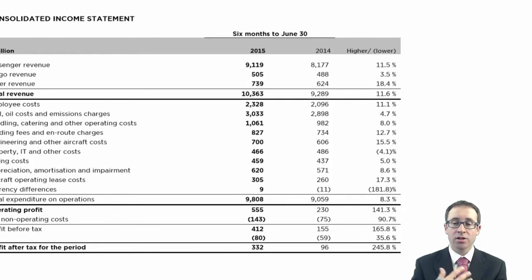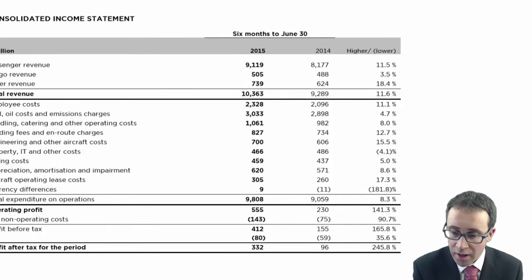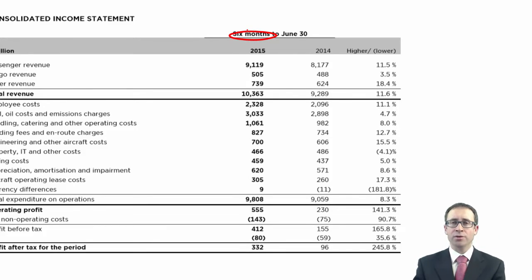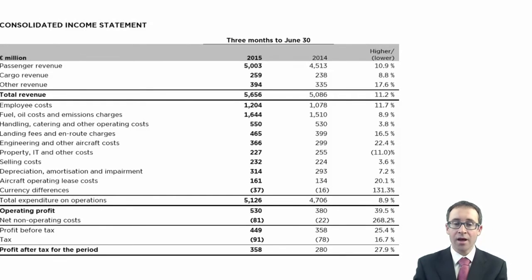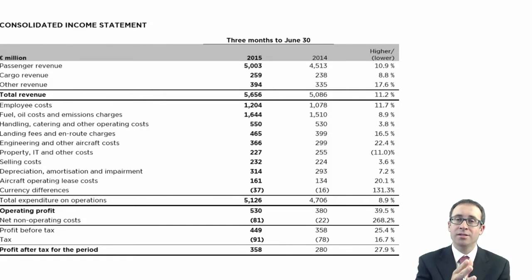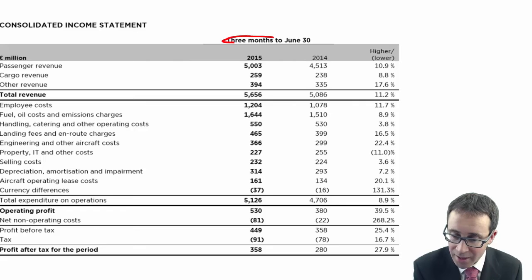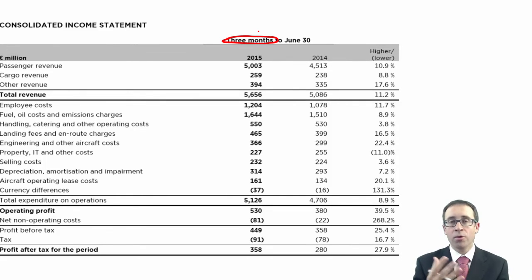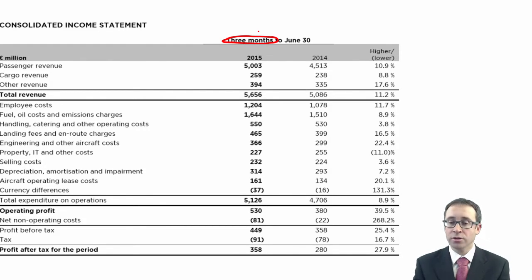On the consolidated income statement, you've got the six months to the end of June — so that's for their six-month period. And remember, you needed to do both cumulatively to the date and also for that interim period. So for the interim period here, given that we're in the second three months of the year, we also need to look at what those second three months have shown us — so that's April, May and June results for this year compared to April, May and June results for last year.